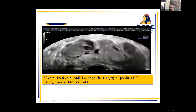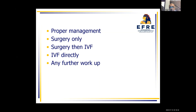I have this case — a case of bilateral chocolate cysts, obliteration of the Douglas pouch, and a negative sliding sign. The patient is 37 years old, primary infertility, AMH is 1.8, no previous surgery, no previous IVF, kissing ovaries, and obliteration of the Douglas pouch. Should we do surgery? Should we do surgery then IVF? Should we do IVF directly, or any further workup? Let us start with Professor Bruce.